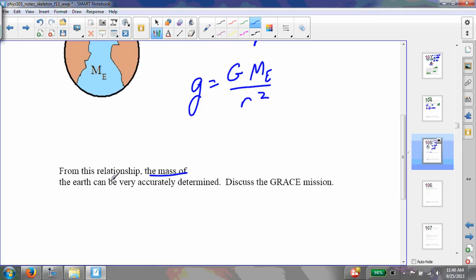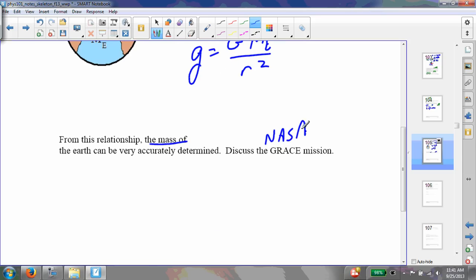So from this, it's very easy to determine the mass of the Earth. And this is what a NASA mission called GRACE is doing. GRACE is measuring the acceleration due to gravity. As it orbits around the planet, there are actually two satellites that are orbiting, and they measure very accurate values for the acceleration due to gravity. And from that, they're able to determine the mass of the planet in particular spots.